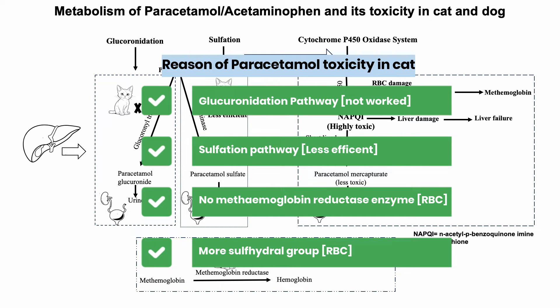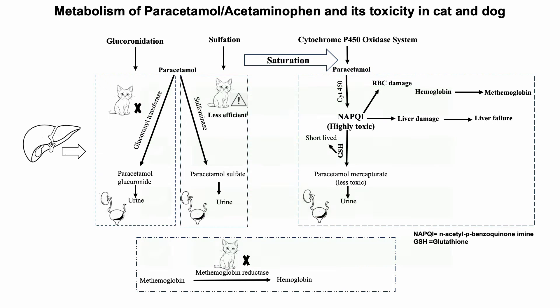In dogs, although glucuronyl transferase and sulftransferase enzymes are present, overdosing or repeated low dosing saturates these pathways to produce more NAPQI. Signs of acute toxicity are usually seen when doses exceed 100 mg/kg, and clinical signs of methemoglobinemia have been reported at 200 mg/kg in dogs.